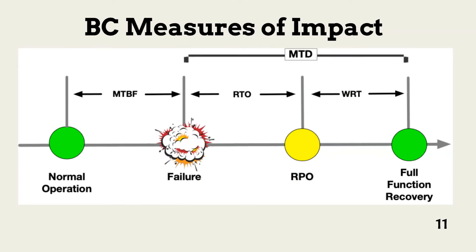Now let's quickly walk through how the measures work. First, the system and the supported business functions are working properly during the mean time before failure. Mean time before or between failures is an expectation of how long a function will operate before it fails. Eventually, the system does fail, taking down supported business functions.